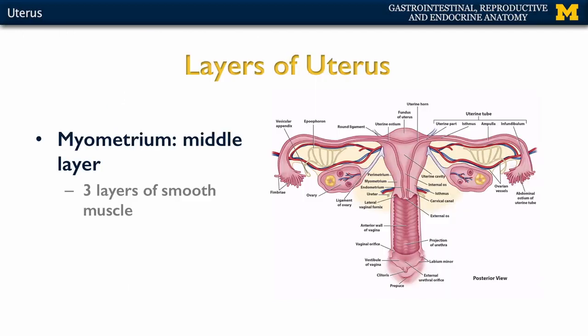Moving deeper, we get to the myometrium. The prefix 'myo' tells us we're talking about muscle. You have three layers of smooth muscle, which will contract during labor in order to help expel the fetus. It can also contract during the menstrual cycle, producing what are referred to as cramps. This is the middle layer and can change dramatically depending on what's going on with the uterus. During pregnancy, you will have great extension but thinning of the muscle in this region.